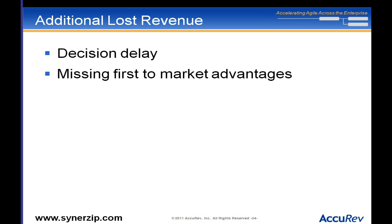A question came in pertaining to the cost of delay topic: 'You showed those pictures where features have a market window and value declines over time. How can teams actually assess and come up with those estimates so they can be more thoughtful about planning?' Good question. That's not always easy, but one method is to get various business domain experts together and have them estimate value much like developers estimate cost.